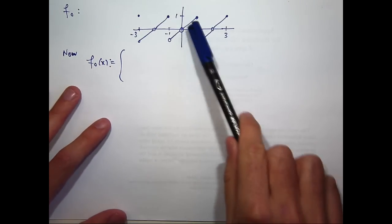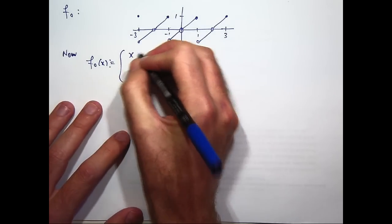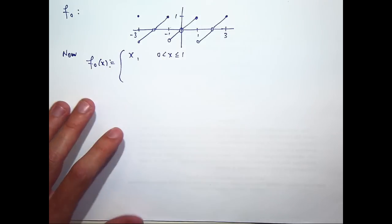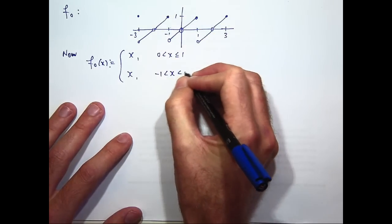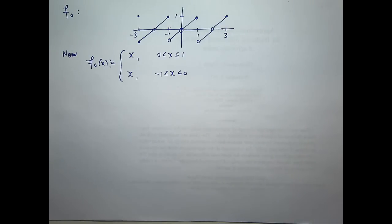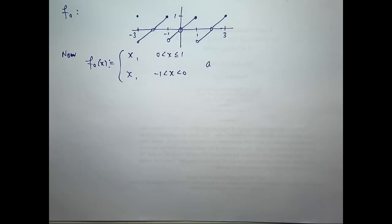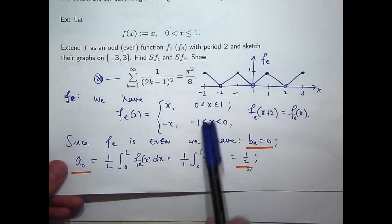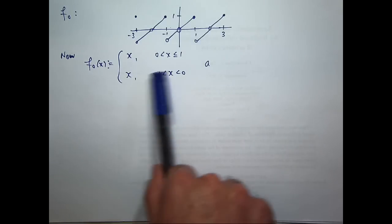If I wanted to write down an explicit algebraic form for f_O, I would define it on two intervals: f_O(x) = x on (0,1] and f_O(x) = x on [−1,0) — that is, the original x function on both parts. I haven't defined it at x = −1 because that's built into the periodicity. For the even function case, you could use ≤ or < at the endpoints, but for the odd extension at a point like x = −1, the definition must be careful to avoid defining the function two ways at one point.